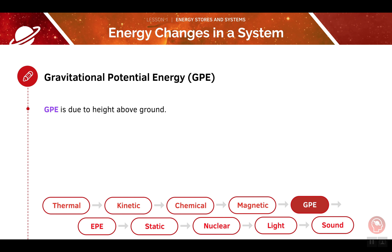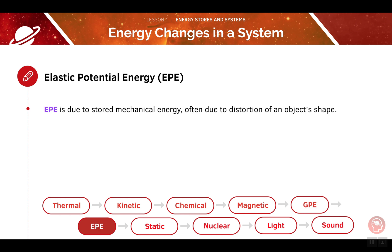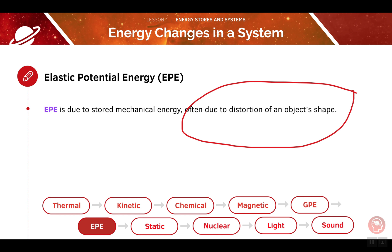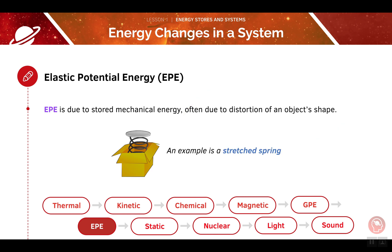GPE, or gravitational potential energy, is the energy due to height. When an object is raised above the ground, it gains GPE. The higher the object is above the ground, the more GPE it has. Elastic potential energy is another form of stored mechanical energy — it's often due to a distortion of shape. For example, when we stretch a spring, we are deforming its shape. As this happens, the spring is gaining elastic potential energy. When we let go of the spring, it will use this stored energy to return to its original shape.